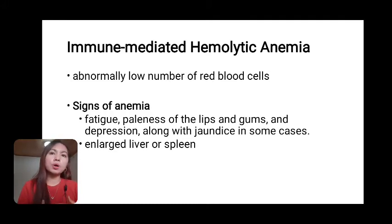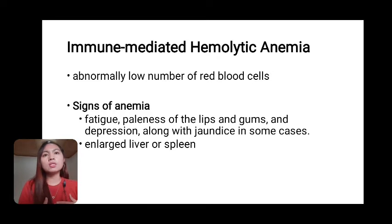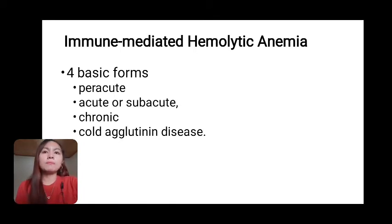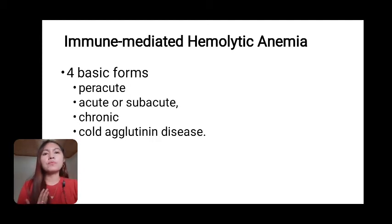Immune-mediated hemolytic anemia is a severe and life-threatening disease in which the dog's immune system sees its own red blood cells as foreign invaders and therefore produces antibodies to destroy them, causing anemia. Signs of anemia include fatigue, paleness of the lips and gums, depression, and jaundice in some cases, as well as an enlarged liver or spleen. Most forms are treatable with medication including corticosteroids and cytotoxic drugs such as those used in chemotherapy. Blood transfusions may be necessary.